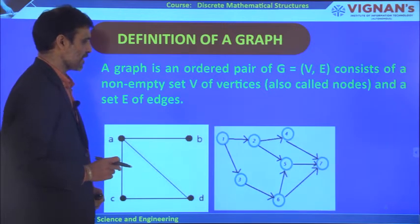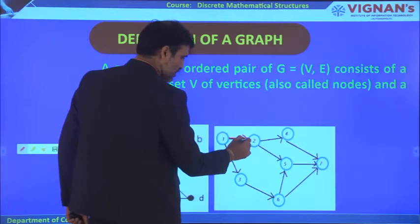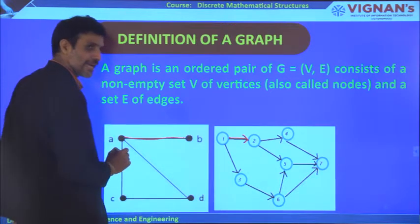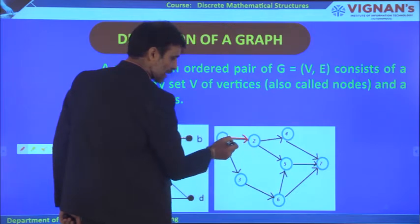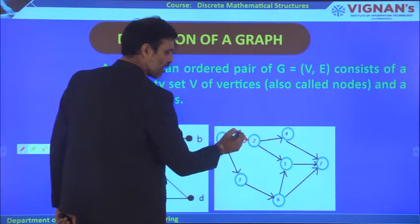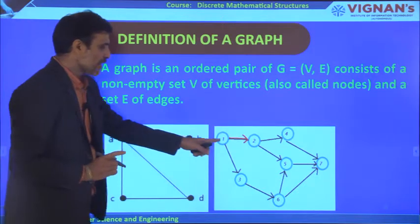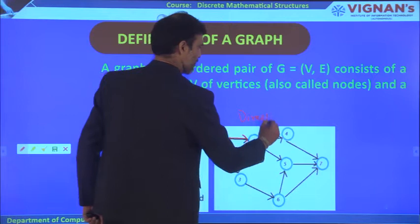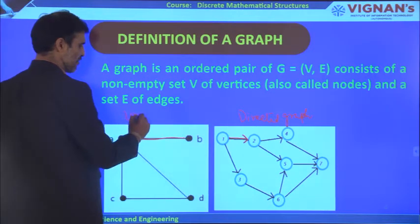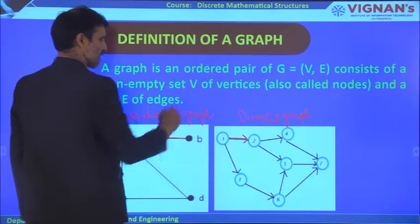There is another type of graph where edges have a direction. In that case, you can only go from vertex 1 to vertex 2, but you cannot come back from 2 to 1 because there is no such direction. Therefore, it is called a directed graph. A graph with directions is called a directed graph; a graph without directions is called an undirected graph.